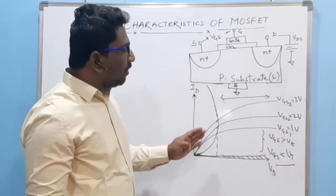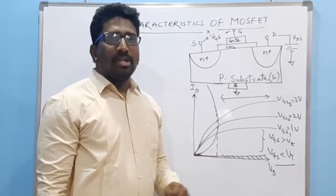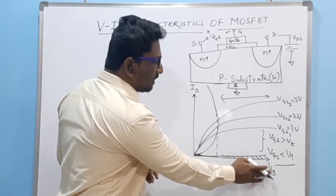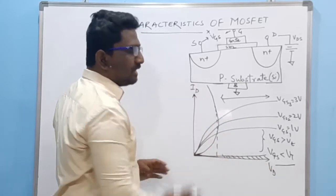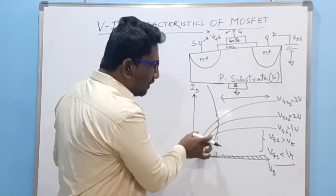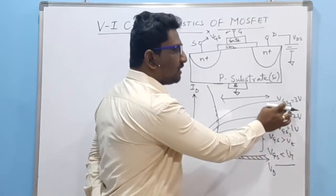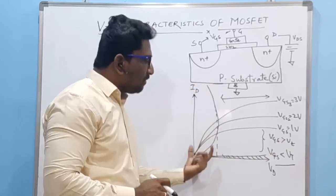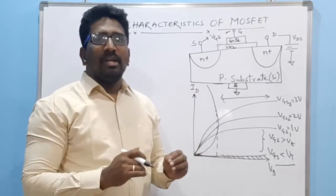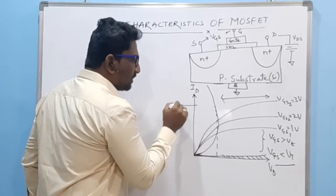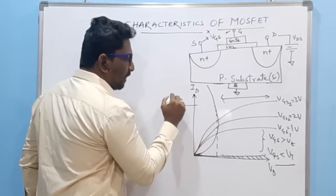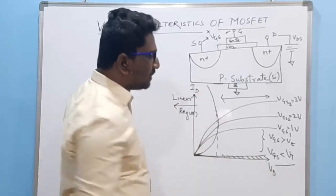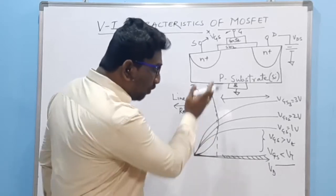Once VGS is greater than Vt, the drain current begins to vary with drain voltage. As VDS increases, the current also increases. The graph shows three curves for VGS1 = 1V, VGS2 = 2V, and VGS3 = 3V — each showing higher current with higher VGS. In this portion of the graph, there is a linear increase in drain current with respect to increasing VDS, so this is called the linear region.